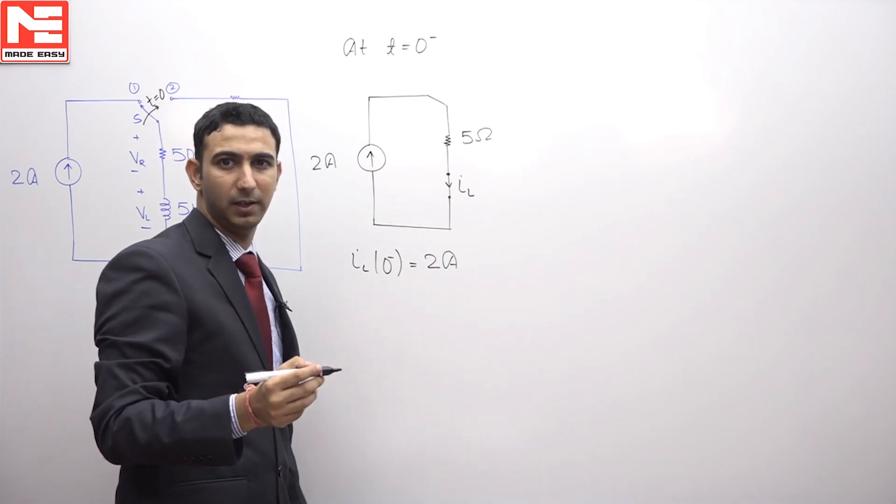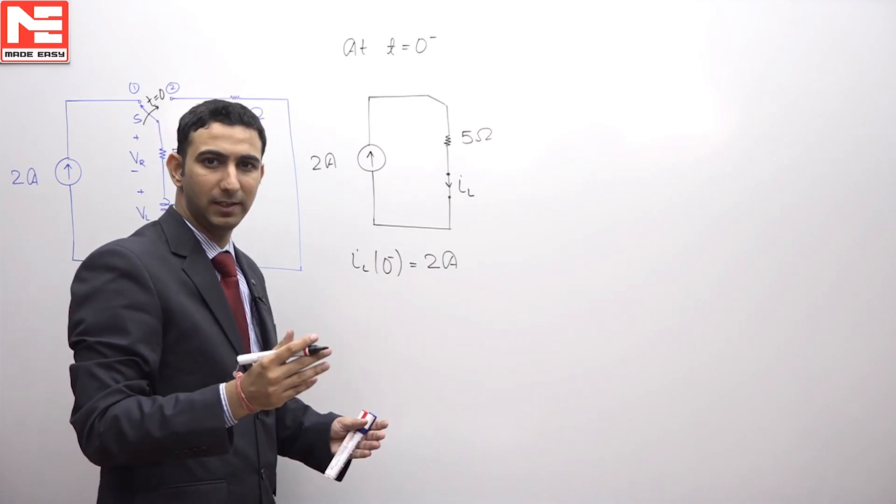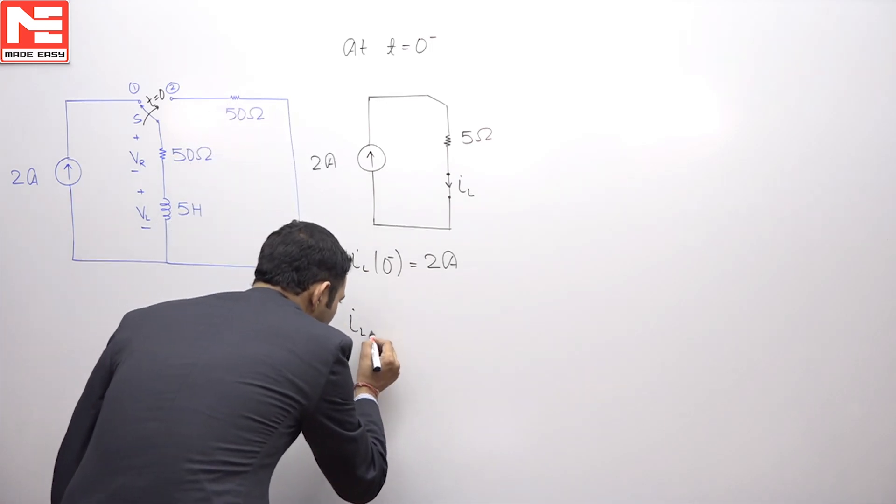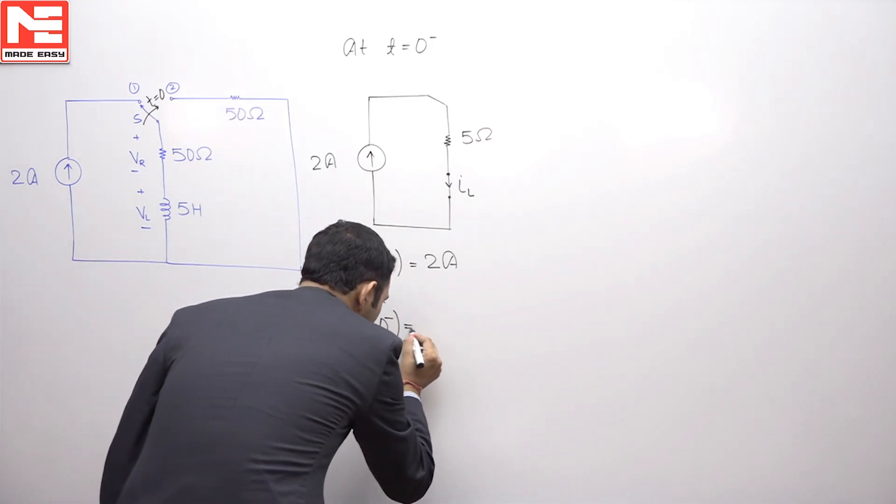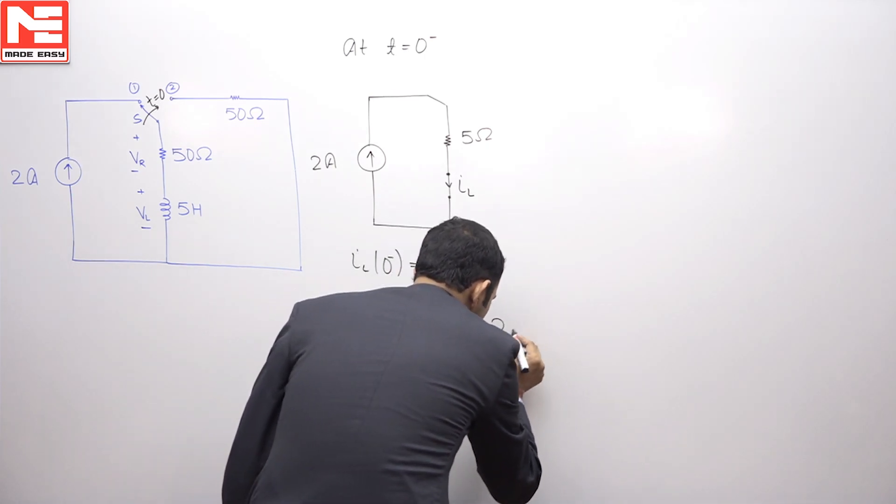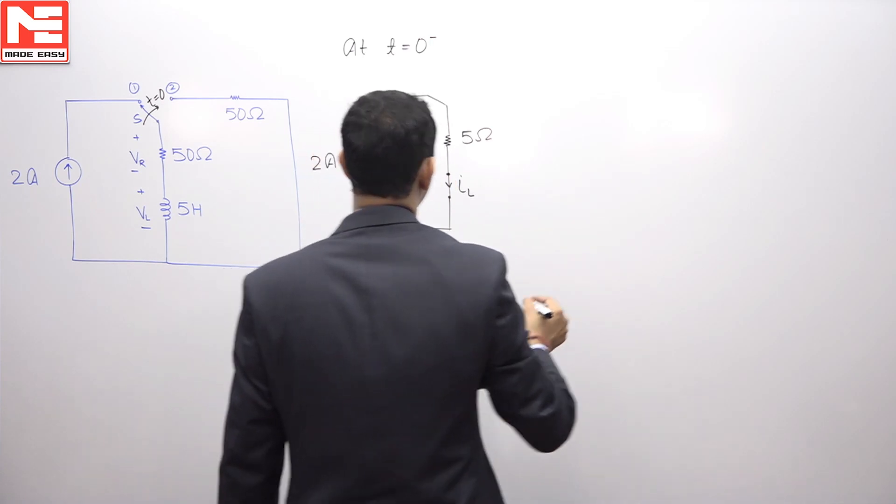Now, we know that as inductor does not allow the sudden change in current, so whatever value of current was there at 0 negative, the same value will be there at 0 positive. Therefore, IL(0-) will be same as IL(0+), so it is coming as 2 ampere.